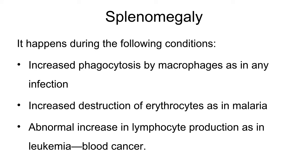When reactions are occurring in the spleen, the spleen may appear as an enlarged structure and this enlargement of the spleen is referred to as splenomegaly. It occurs usually in conditions where there is increased phagocytosis by the macrophages as in infection, increased destruction of erythrocytes as seen in malaria, or abnormal increase in lymphocyte production as seen in blood cancer.